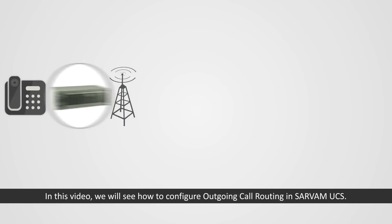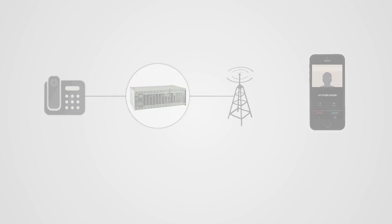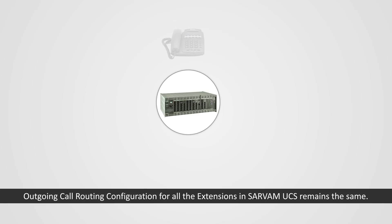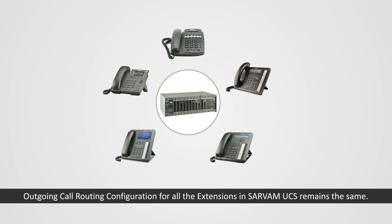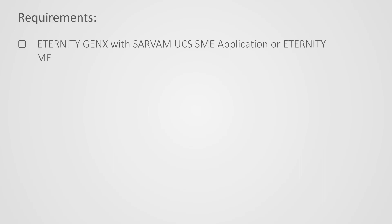In this video we will see how to configure outgoing call routing in Servam UCS. Outgoing call routing configuration for all extensions in Servam UCS remains the same. Requirements include Eternity GE Annex with Servam UCS SME application, or Eternity ME Annex or LE Annex with Servam UCS ENT application.